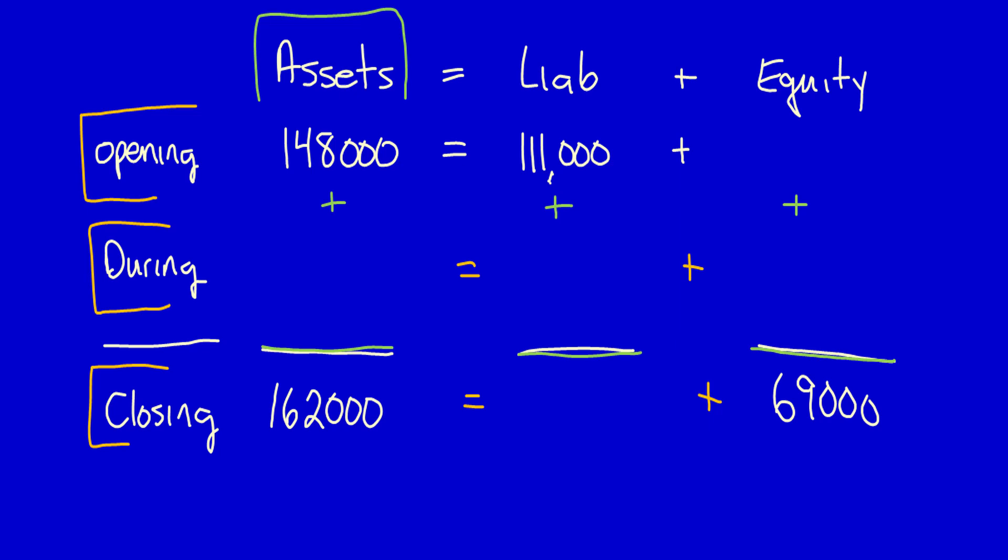$148,000 is equal to $111,000 plus equity. So $148,000 minus $111,000 is equal to $37,000.